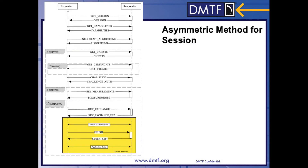Here is the flow for the asymmetric method to establish the SESN. The SESN begins with key exchange and the corresponding key exchange response. This request and response exchanges the public portion of the requester and responder's DHE key pair. The SESN is fully established at the completion of finish and finish response. After this, any data that traverses the transport in the SESN is protected.